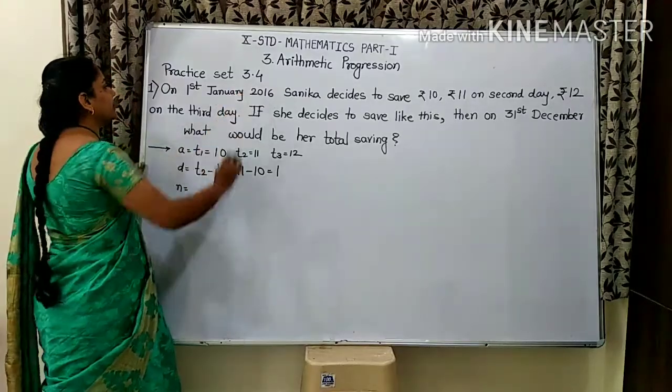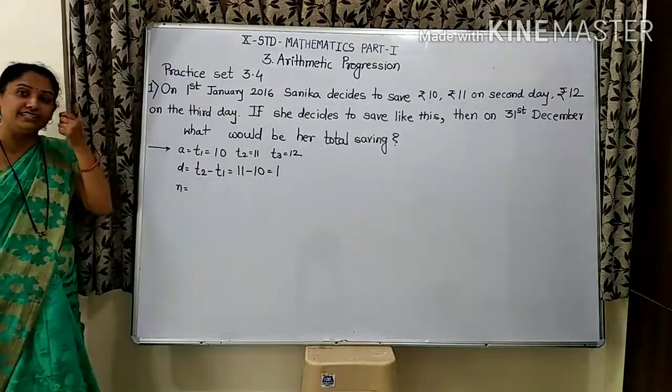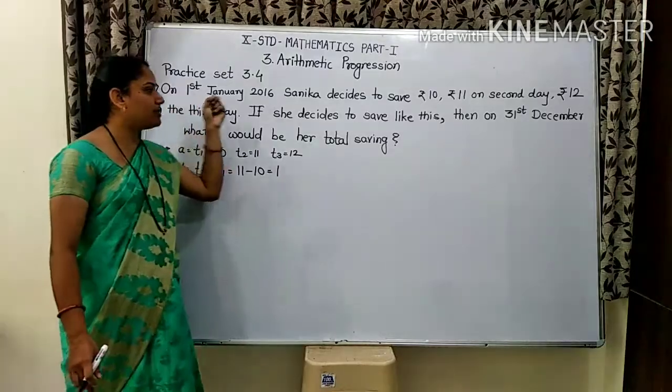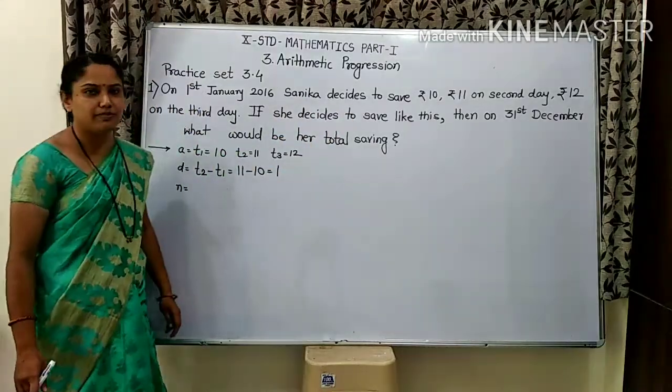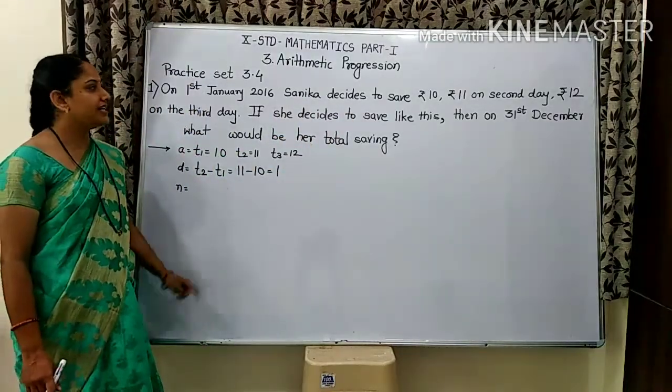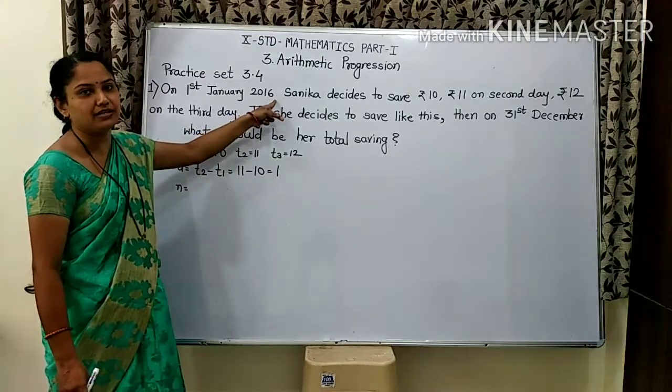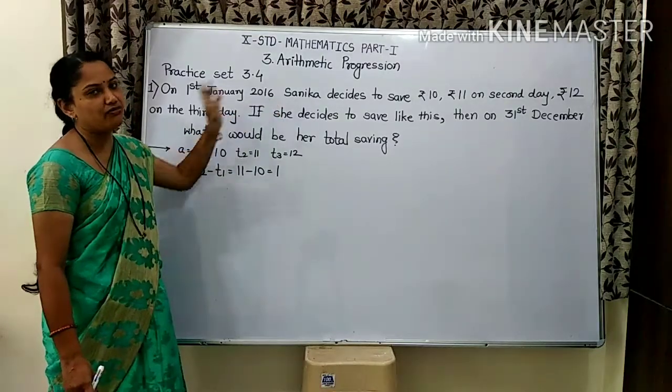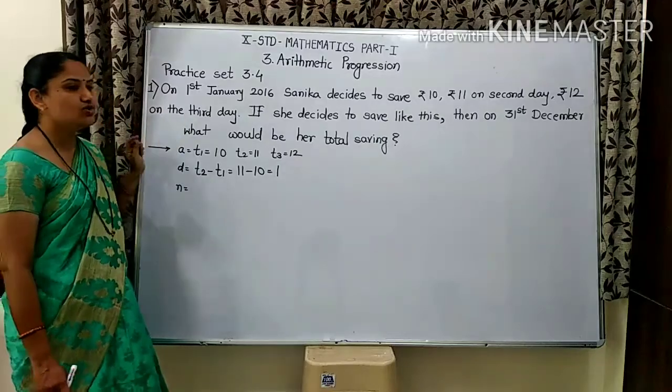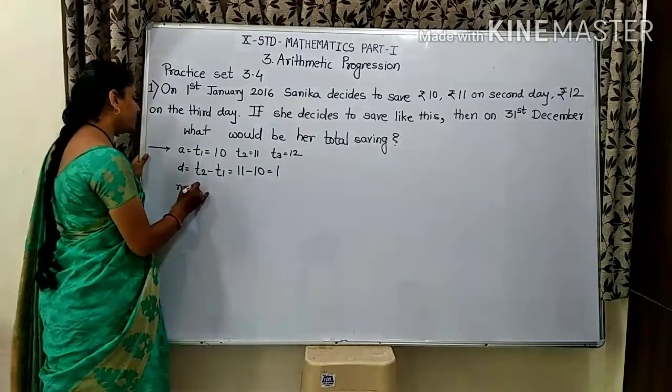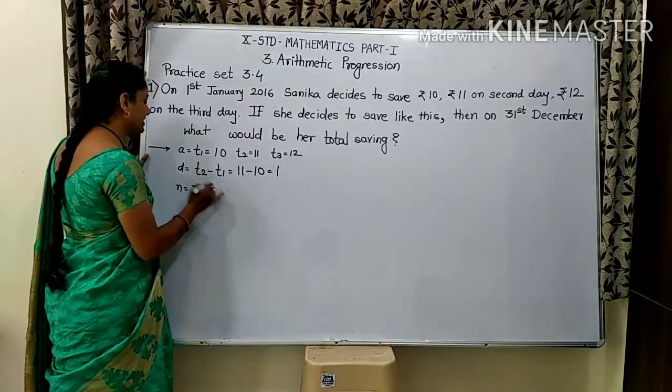How many days are there in year 2016? From 1st January to 31st December. The total days in a leap year. This is leap year. It can be divided by 4. So, it is a leap year. Total number of days is 366.